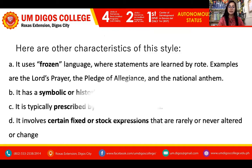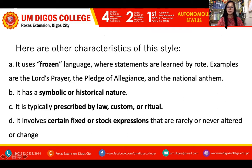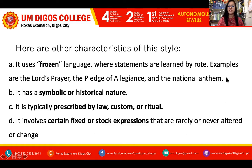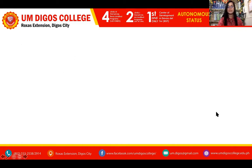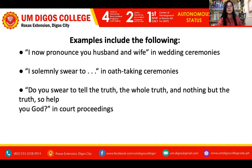Here are other characteristics of this style. It uses frozen language where statements are learned by rote — examples are the Lord's Prayer, the Pledge of Allegiance, and the National Anthem. It has a symbolic or historical nature and is typically prescribed by law, custom, or ritual. It involves certain fixed or stock expressions that are rarely or never altered or changed — frozen means constant, never changing.